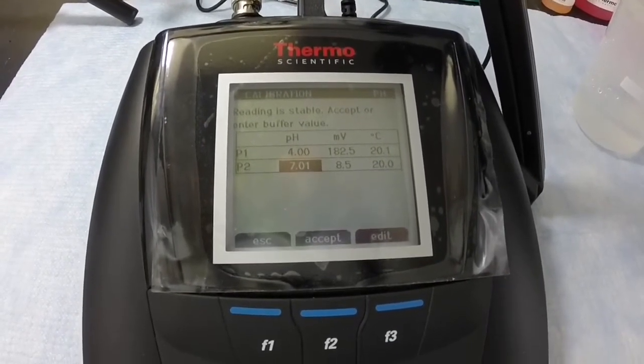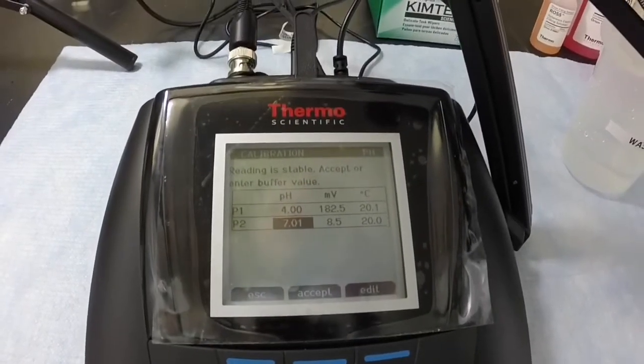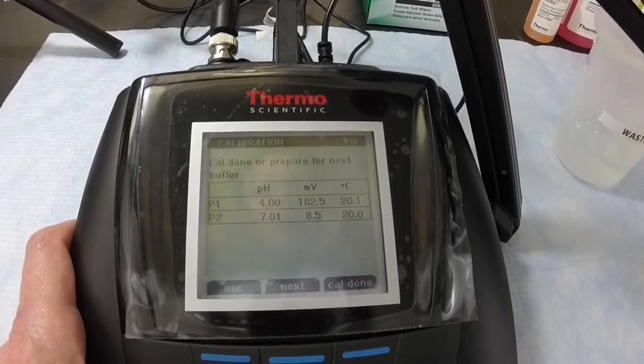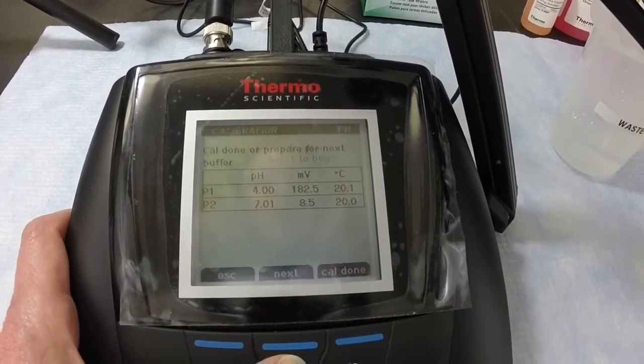We choose the option to accept the second calibration point. Since we're doing a three-point calibration, we press next for the last calibration point.